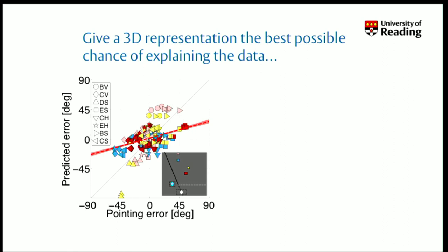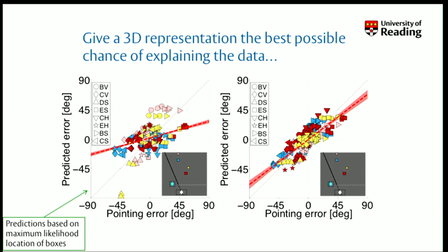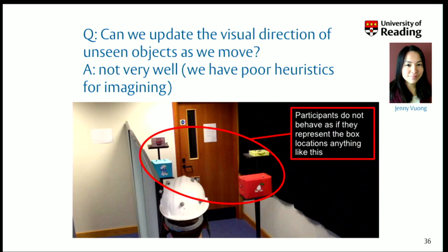This final analysis does the maximum likelihood version and asks: what are the predicted errors compared to the real errors? That's not a very good model, but it's the best possible model you could come up with if you thought that people built a 3D model in their head. This idea of pointing depending on the screen is a much better description of the data. Take-home message: participants don't behave as if they represent the locations of these boxes anything like a true 3D model. Whatever heuristic they're using is a pretty rubbish system. It doesn't look like they're building a nice 3D SLAM-like representation and updating it as they move.